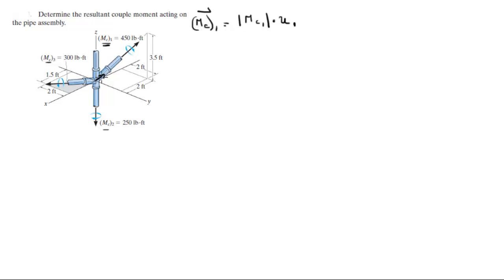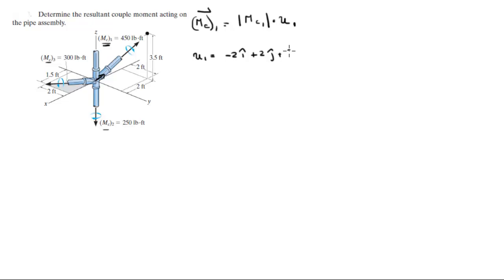So how do you find this unit vector? You've got to find this vector right here and divide it by its magnitude. Unit vector 1 is the vector that goes from here to here — this tiny unit vector. The point sits at negative 2 in the i, plus 2 in the j, plus 3.5 in the k.